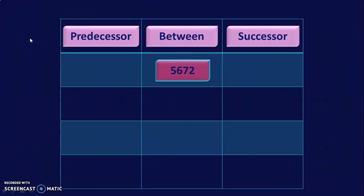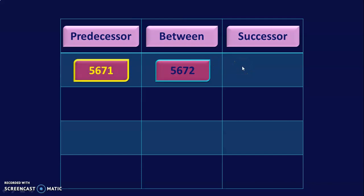Let us do some example sums to understand the concept of predecessor, successor, and between numbers. Here I have a table with 3 columns: the first column is for the predecessor, the middle column is for the between numbers, and the third column is for the successor. The number given is 5672. To find the predecessor, subtract 1: 5672 minus 1 gives 5671. To find the successor, add 1: the answer is 5673.